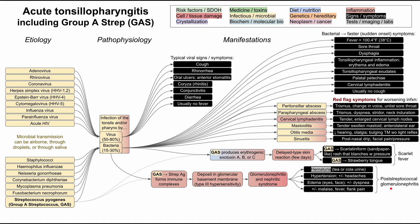The next group A strep complication worth knowing is post-streptococcal glomerulonephritis. The strep antigen forms immune complexes that deposit in the glomerular basement membrane — this is type 3 hypersensitivity — causing glomerulonephritis and nephritic syndrome. You'll have hematuria (noticeable on urinalysis or as tea/cola-colored urine grossly), hypertension that can cause headaches, edema throughout the body most prominently in the face and around the eyes, and in bad cases dyspnea from pulmonary edema. General inflammatory malaise including fever and flank pain can also occur. This usually happens a few weeks after the group A strep throat infection.